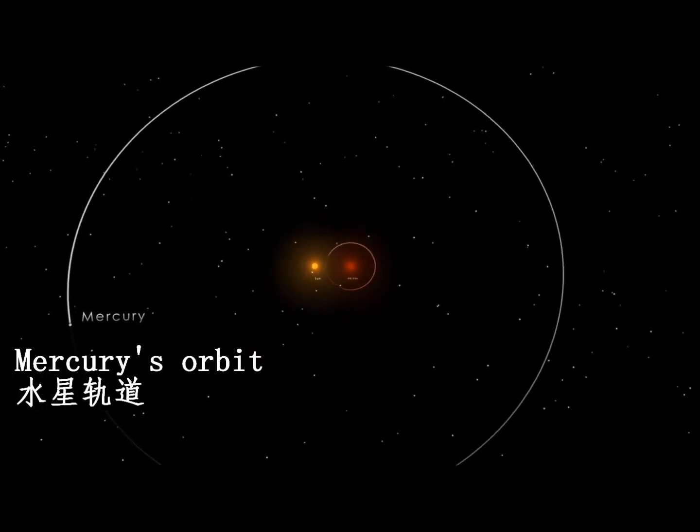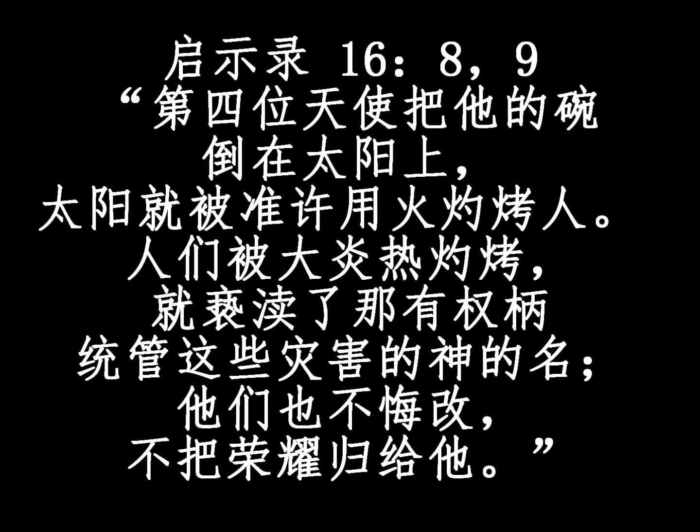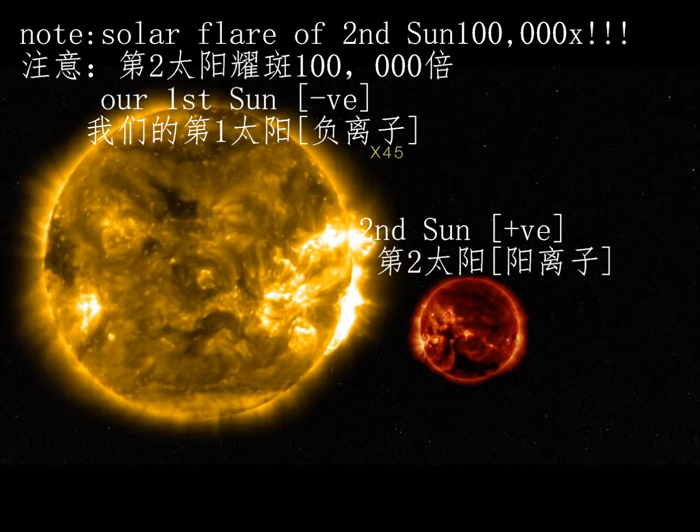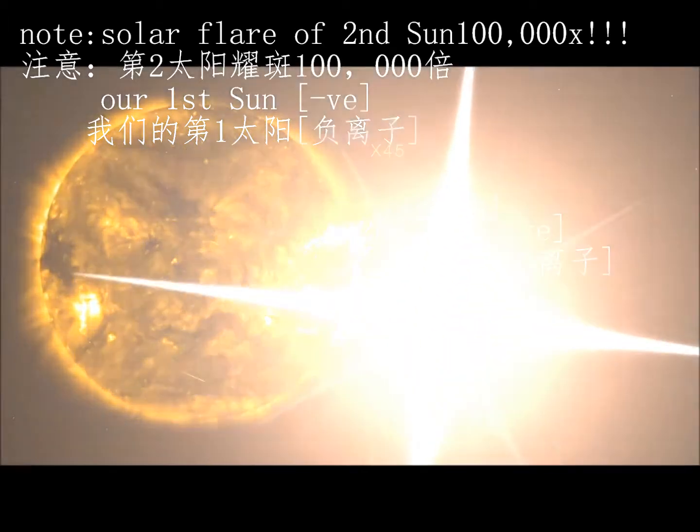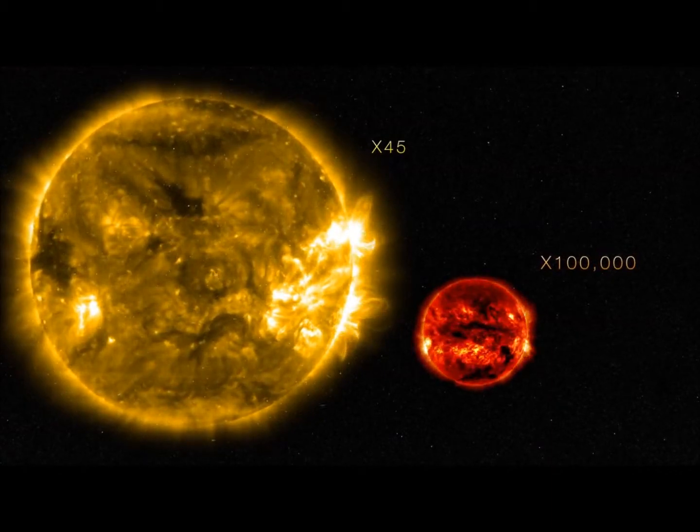When planets are closer to their star, it would have been an X 100,000. So this is several orders.